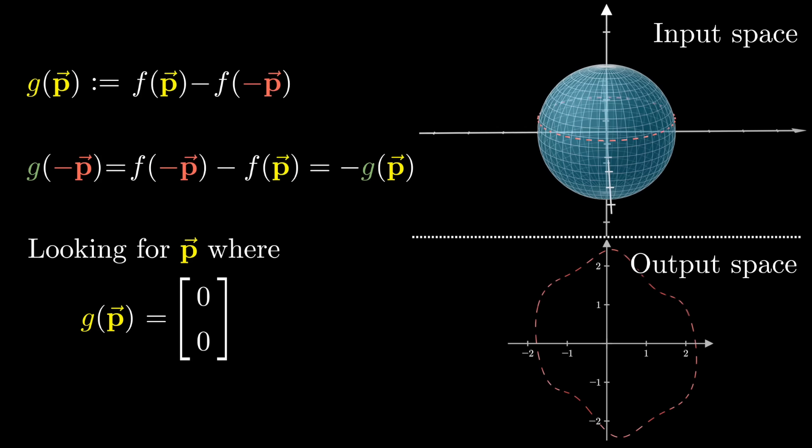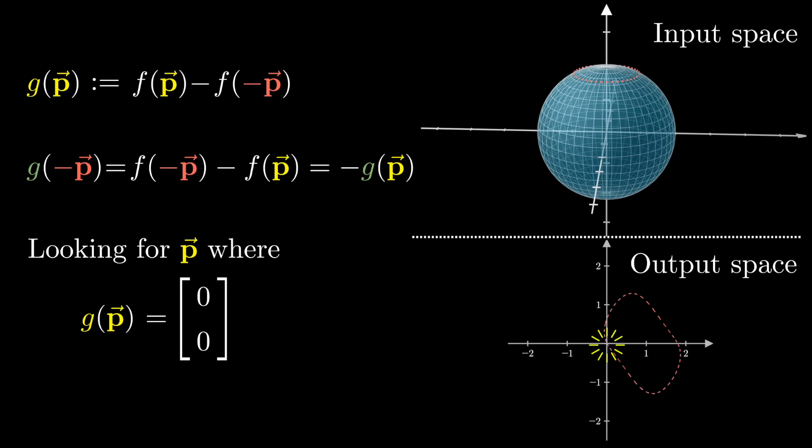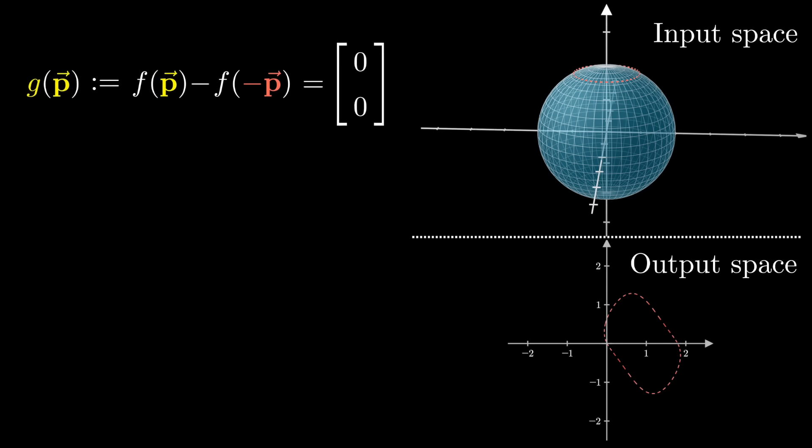And this means there is some point p on the sphere where g of p has the coordinates 0, 0, which means f of p minus f of negative p equals 0, 0, meaning f of p is the same as f of negative p, the antipodal collision we're looking for.